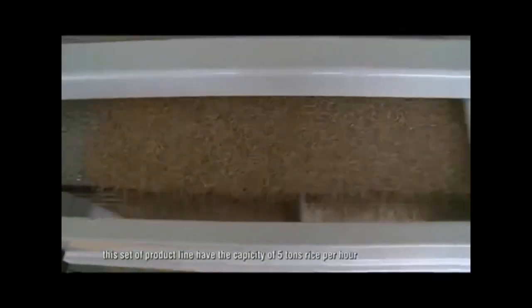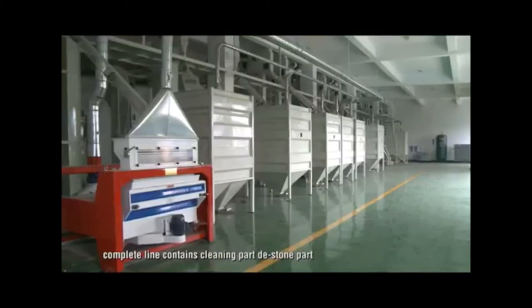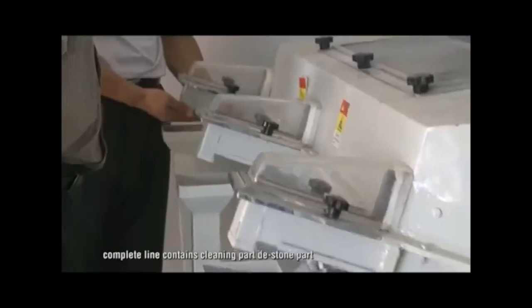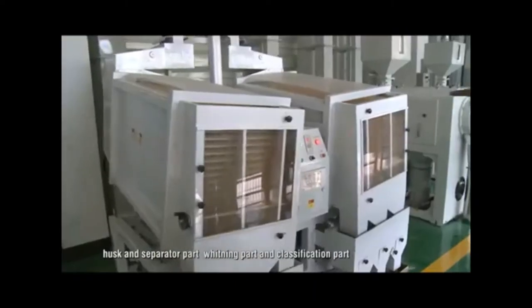This set of product line has the capacity of 5 tons rice per hour. Complete line contains cleaning part, destoner part, husky separator part, whitening part and classification part.